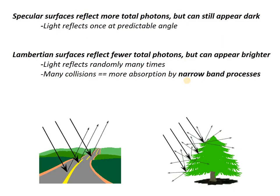What's interesting is that specular surfaces may actually reflect more total photons because there are fewer chances for narrow band absorption, but they can still look dark in the camera because all those photons go off in the same direction — if they miss the camera, the thing looks dark. In contrast, Lambertian surfaces may actually reflect fewer photons overall, but can appear brighter in a camera because there's a kind of guarantee that some of those photons are going to make it back. They reflect fewer photons overall because there are more collisions, and there's a chance for absorption on each of those collisions.